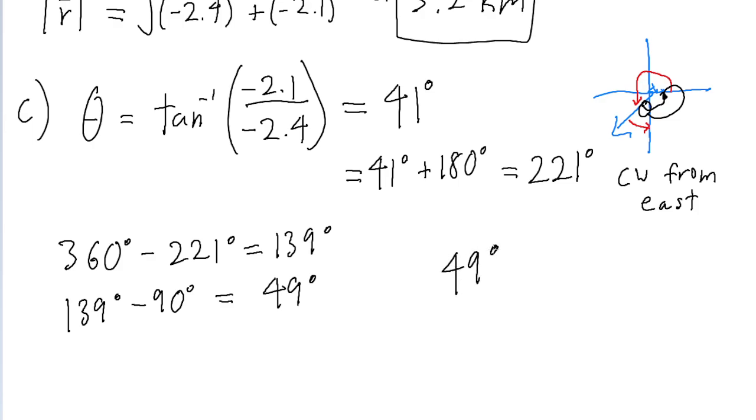So the bird flew at an angle of 49 degrees west from south. That is, in my opinion, the best way to represent the angle. And that is it for this problem.